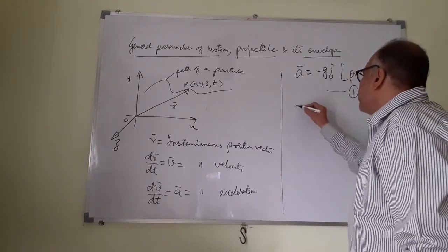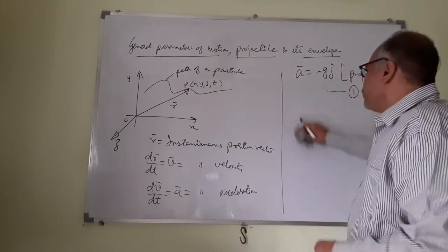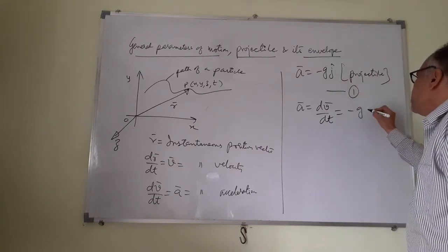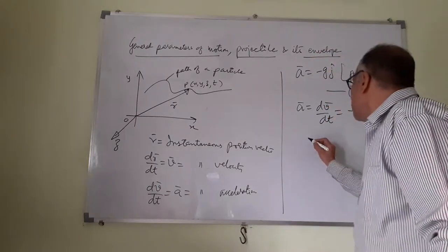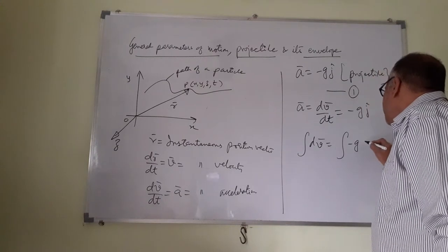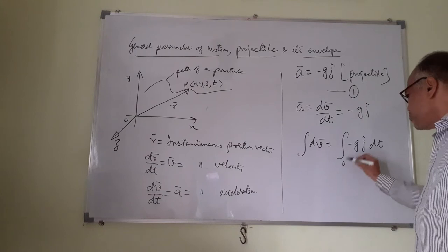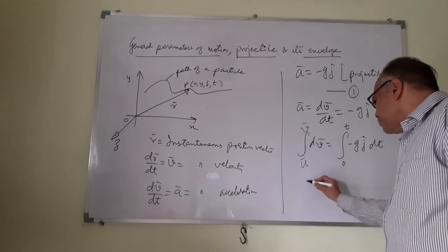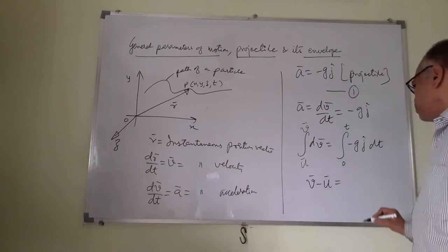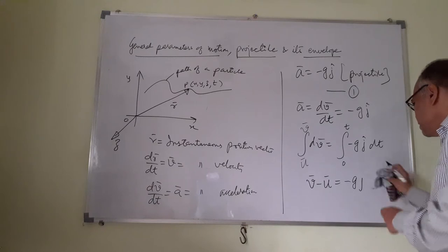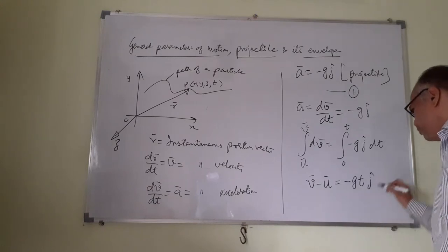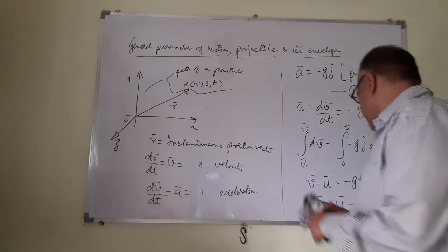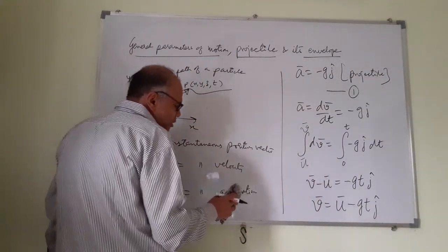We use a = dv/dt = −gj. Integrating both sides with limits from 0 to t (velocity from initial u to v): v − u = −gtj. So v = u − gtj. That is the instantaneous velocity.